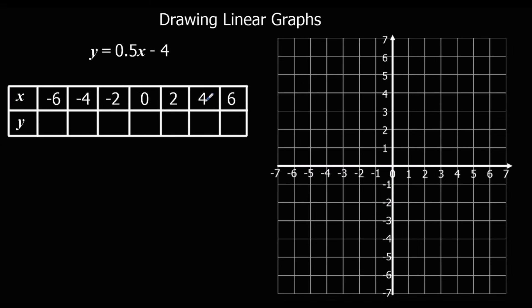Okay, so here's another example. We've got y is 0.5 times x, take away 4. So it's y is half times whatever our number is, take away 4.